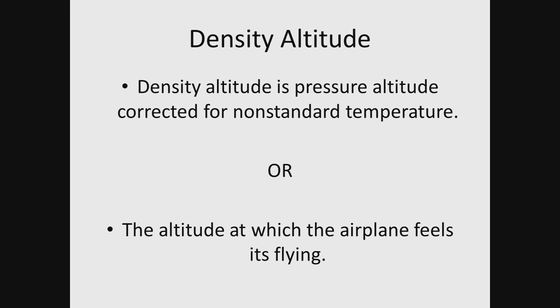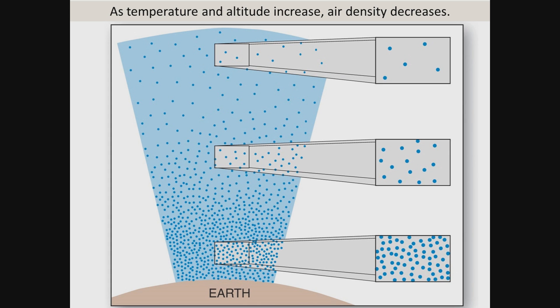In other words, the density altitude is simply the altitude at which the aeroplane feels it's flying. Just because you are physically flying at, say, 5000 feet above sea level doesn't mean the air around you is always the same as that found at 5000 feet in a standard atmosphere. The air at 5000 feet could be significantly denser or less dense than normally found at that altitude, depending upon the temperature. As temperature and altitude increase, air density decreases.